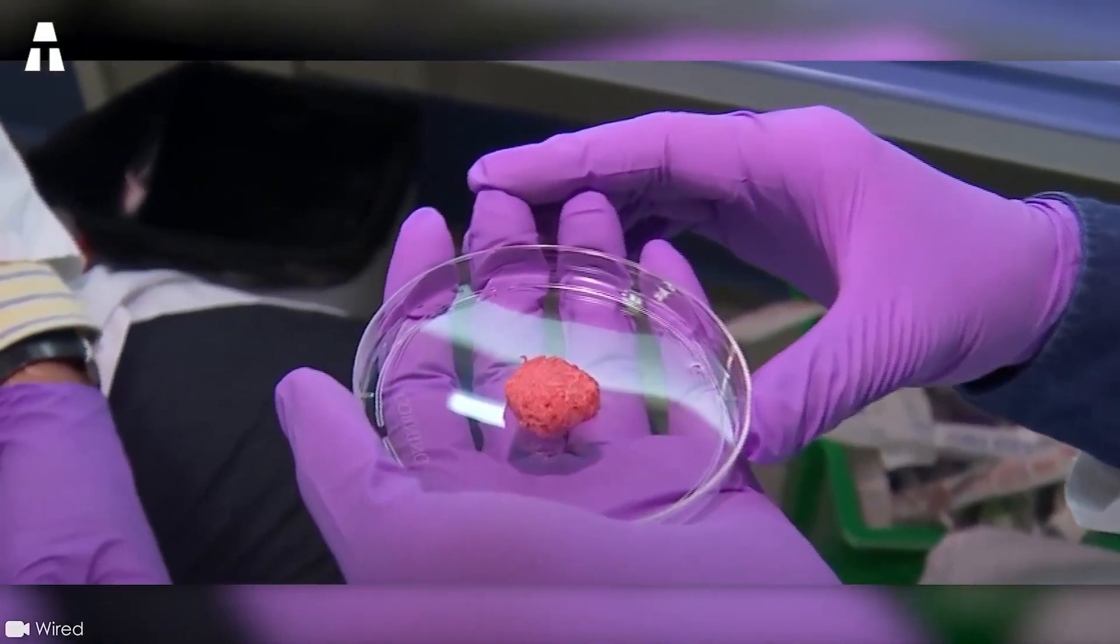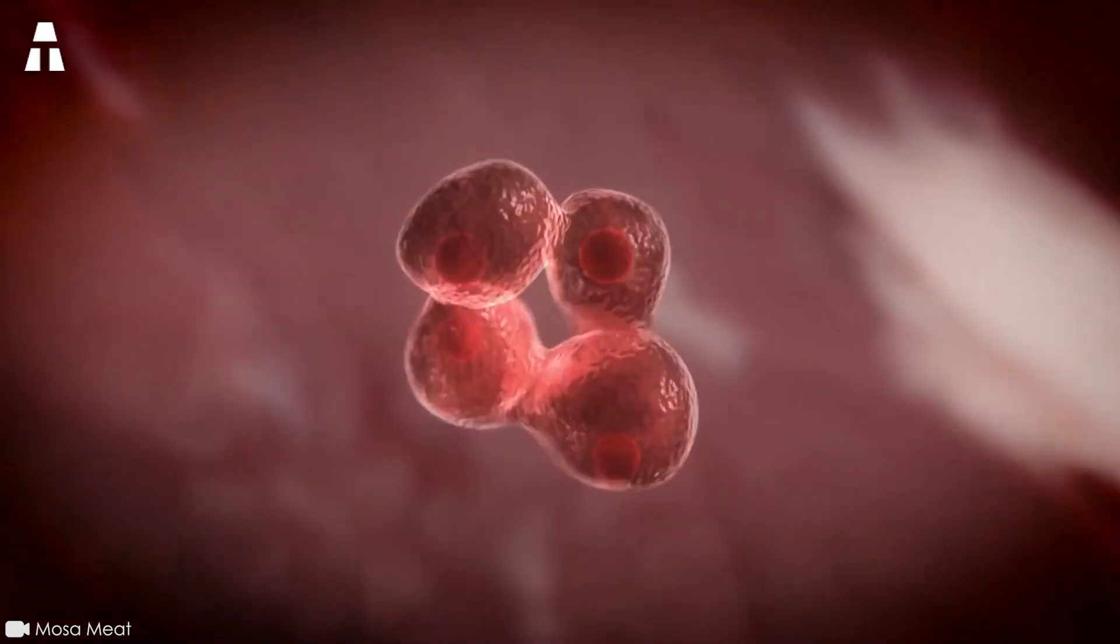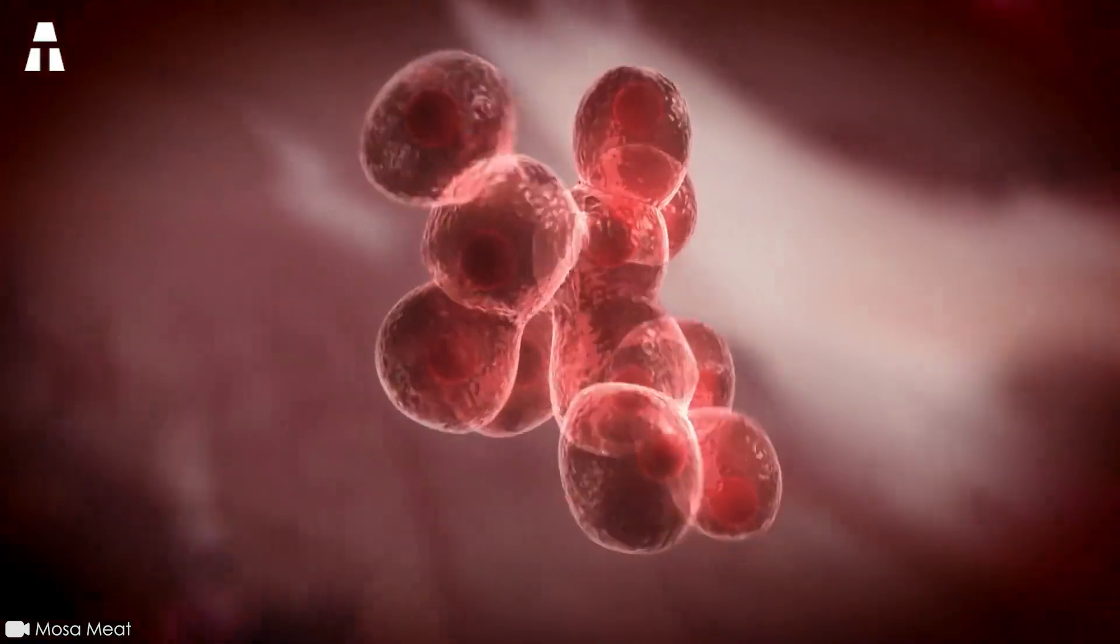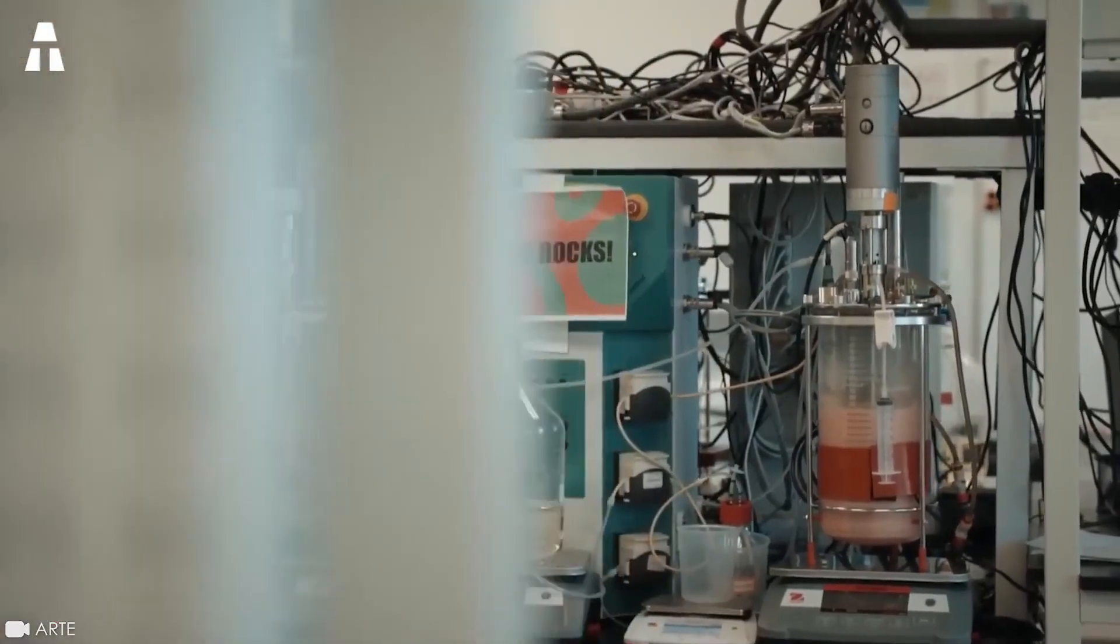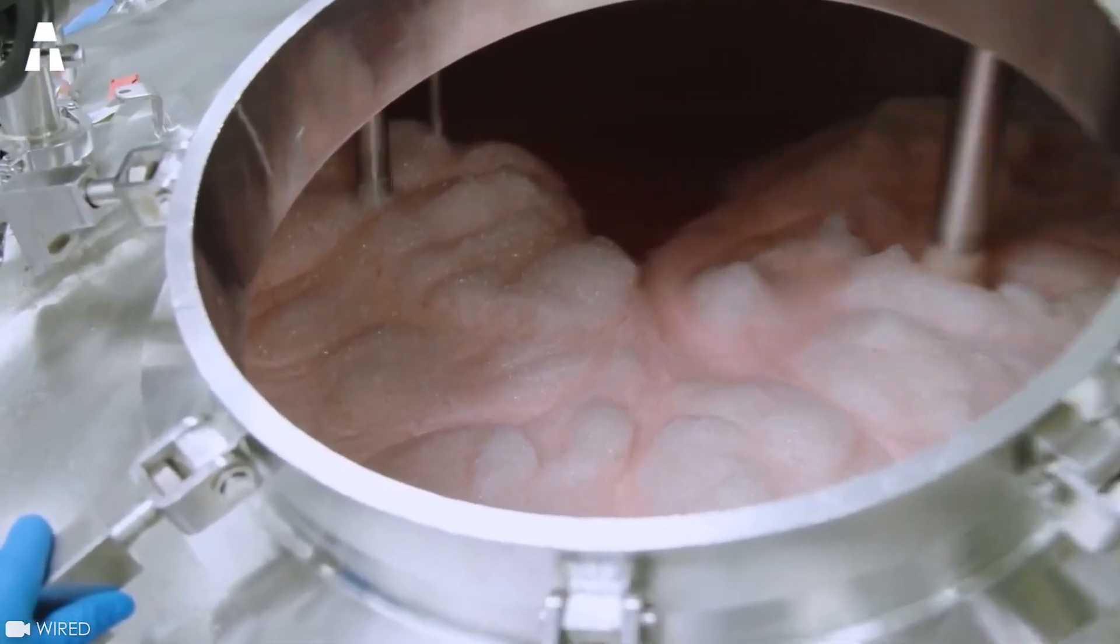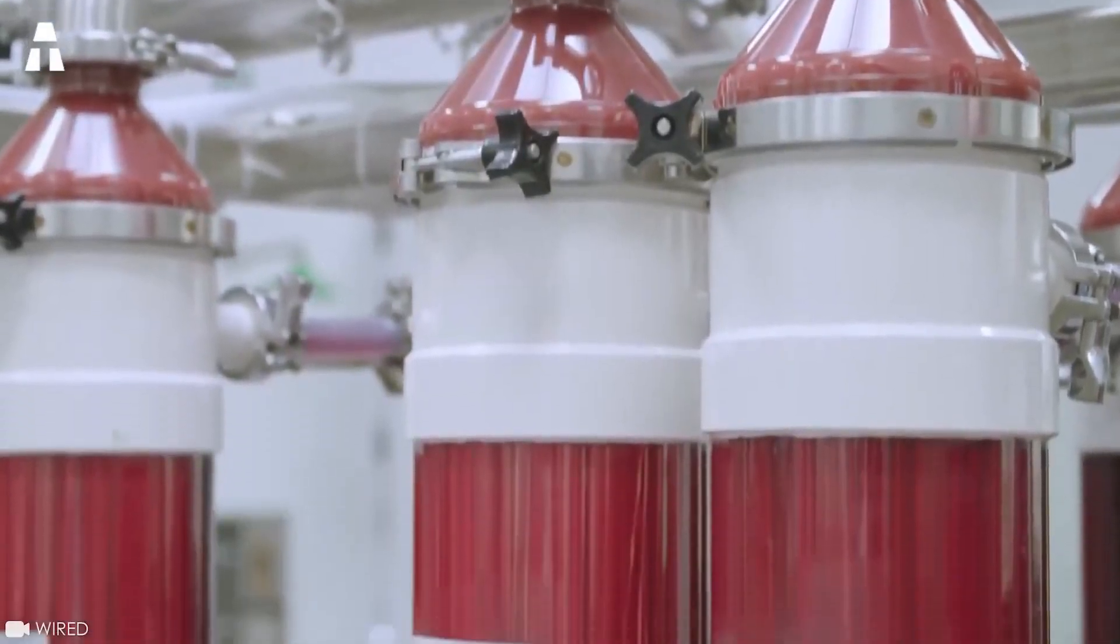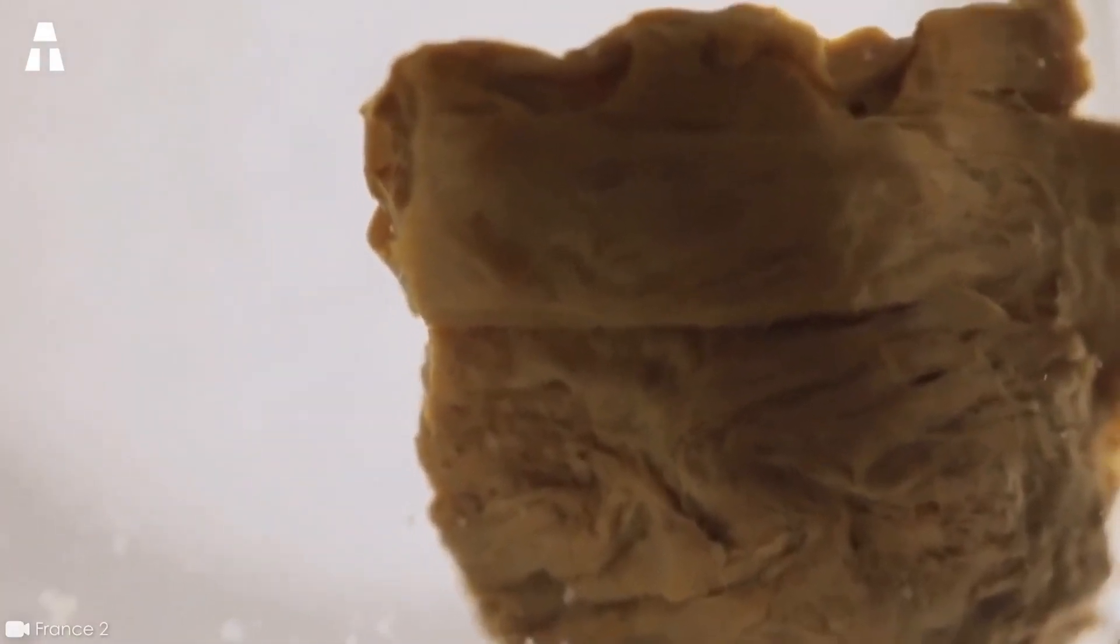Under the influence of certain hormonal factors, they transform into muscle cells. These cells are cultivated in bioreactors. These are sterile chambers containing liquid nutrients. Stimulated by growth factors, they continue to proliferate. They are then mechanically assembled into consumable muscle tissue. We are thus witnessing the birth of artificial meat.